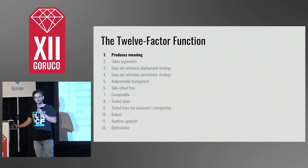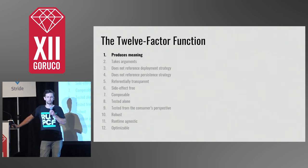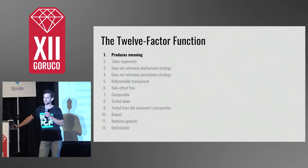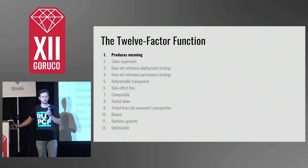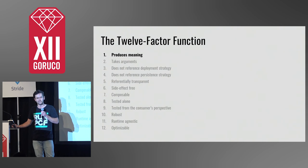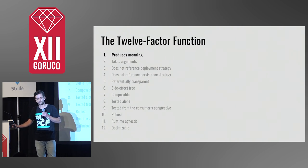So the first criteria of a 12-factor function is that users should find the outputs more valuable than the inputs. In the first example, with the filtering function, this criteria would be satisfied. In the second example, with all the fancy computer science, this criteria would not be satisfied.